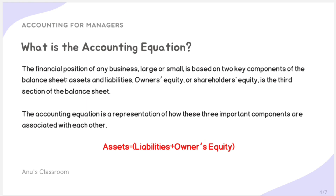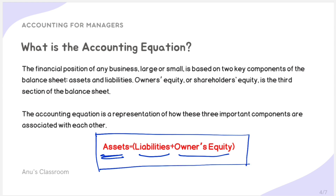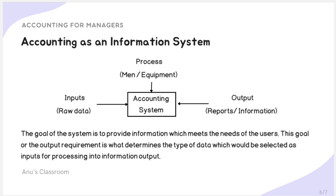The financial position of any business, whether large or small, is based on two key components of the balance sheet: assets and liabilities. Owners' equity or shareholders' equity is the third section of the balance sheet, and the accounting equation represents how these three components are related. Since owners' equity equals assets minus liabilities, we can rearrange that to get the accounting equation: Assets = Liabilities + Owner's Equity. Accounting is the language of business.